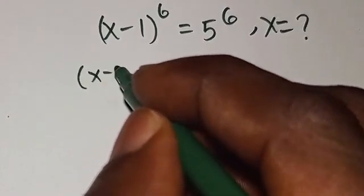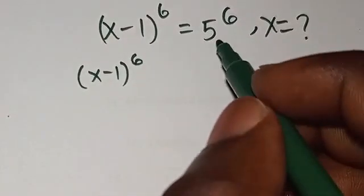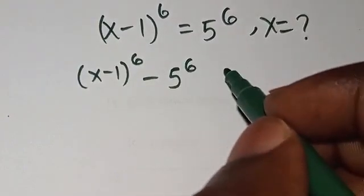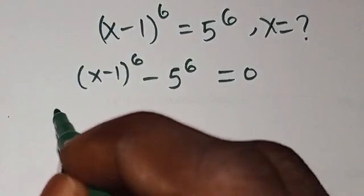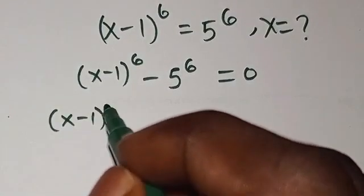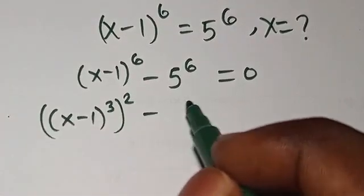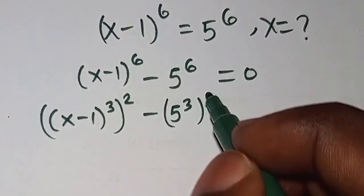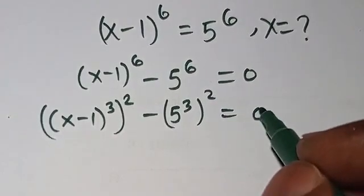So we can have this to be x minus 1 to the power of 6. So we transpose this to get 5 to the power of 6, and equals 0. So we can rewrite this equation as x minus 1 to the power of 3, all squared, minus 5 to the power of 3 squared, equals 0.